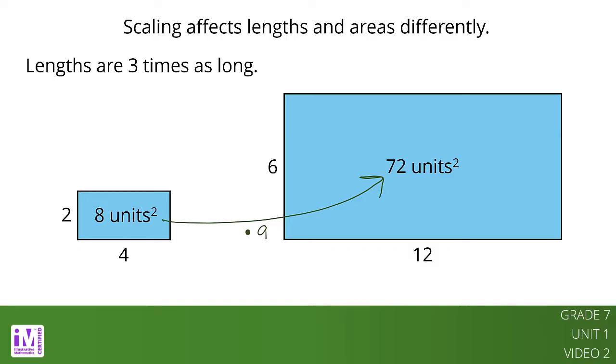Why did that happen? The area of the copy changes by the square of the scale factor. In this example, the scale factor was 3. 3 times 3, or 3 squared, equals 9, so the area of the copy will be 9 times the area of the original.